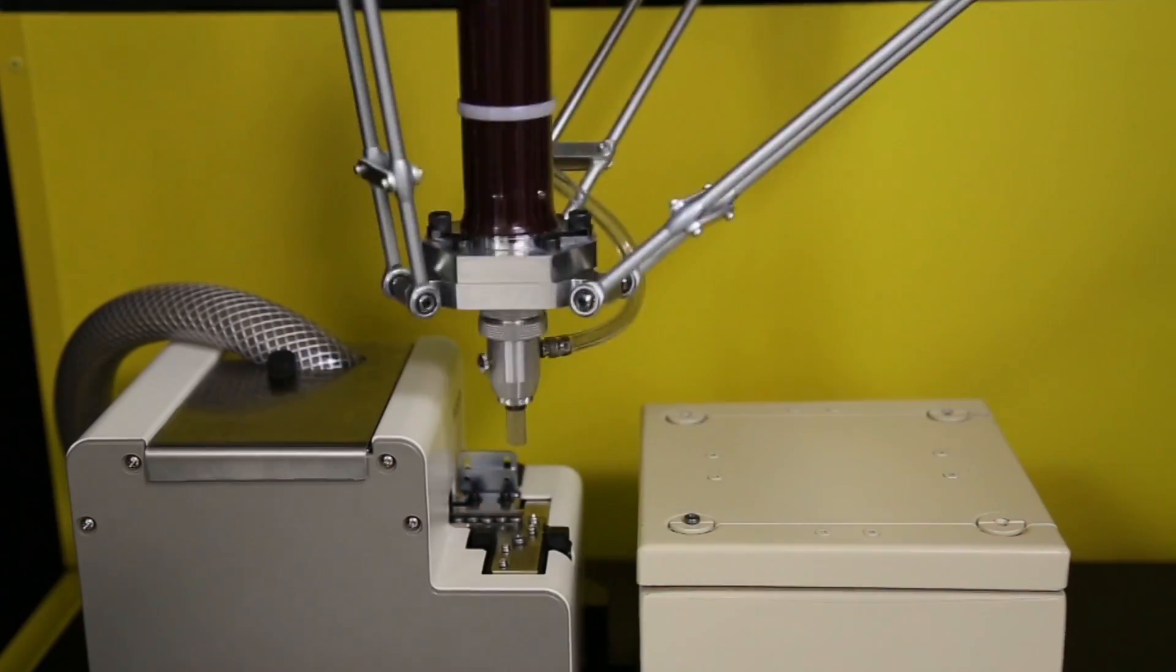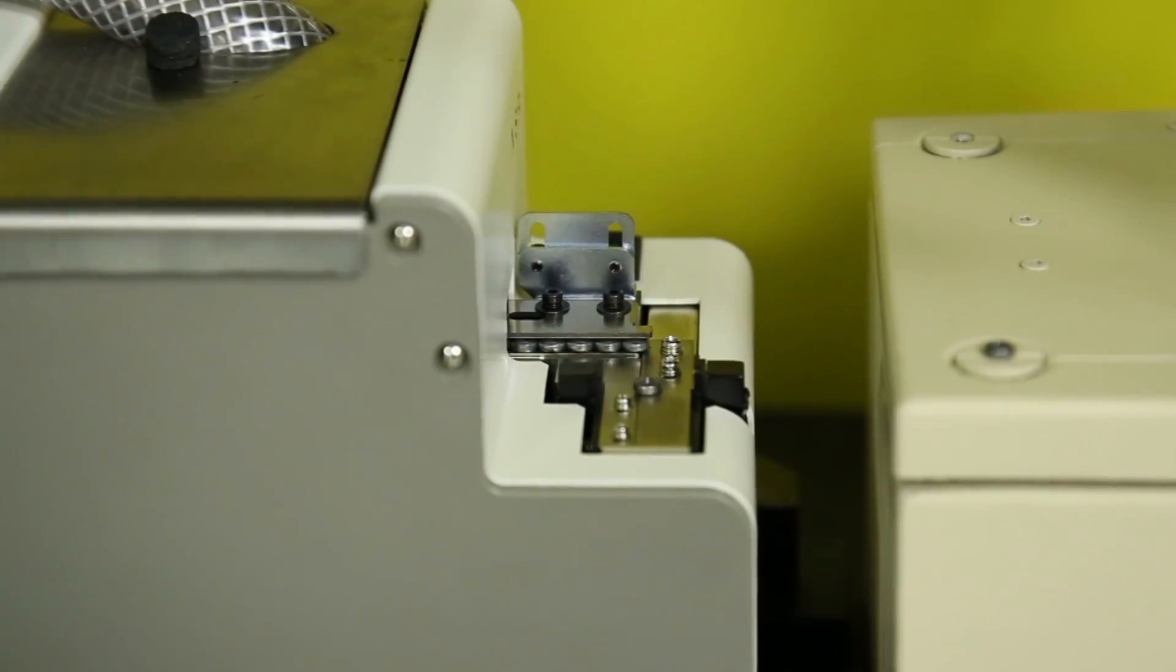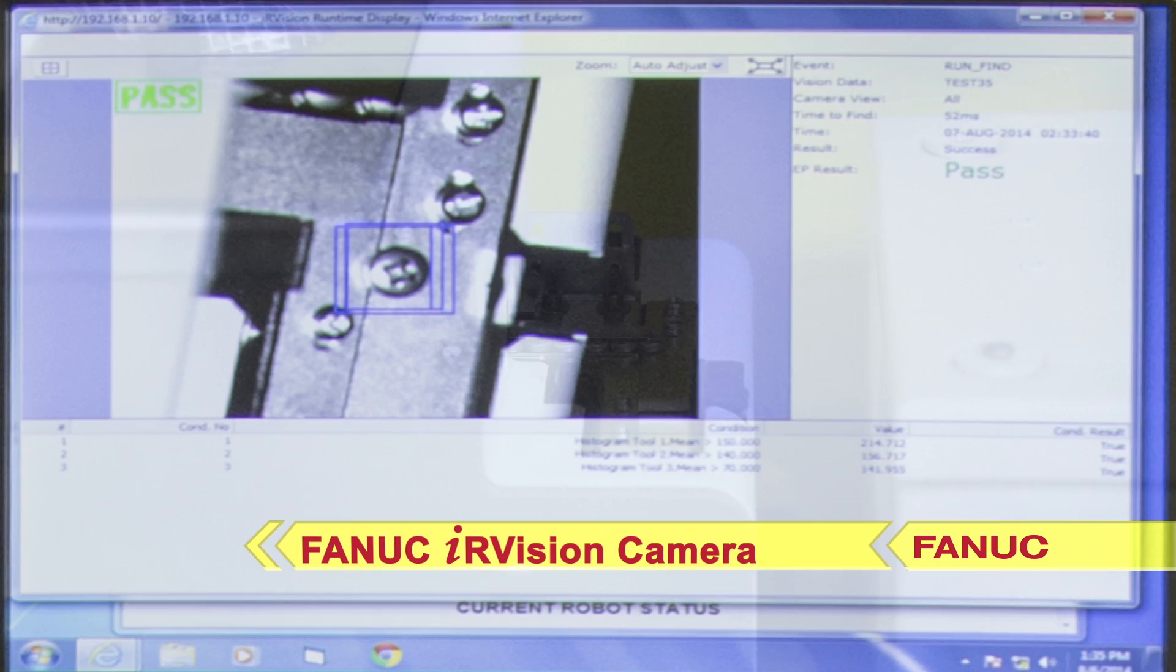The flash of red light is the robot's Fanuc IR Vision equipped camera, taking a snapshot of the screw pickup area to make sure that a screw is present, its precise location, and that no obstacles are in the way.